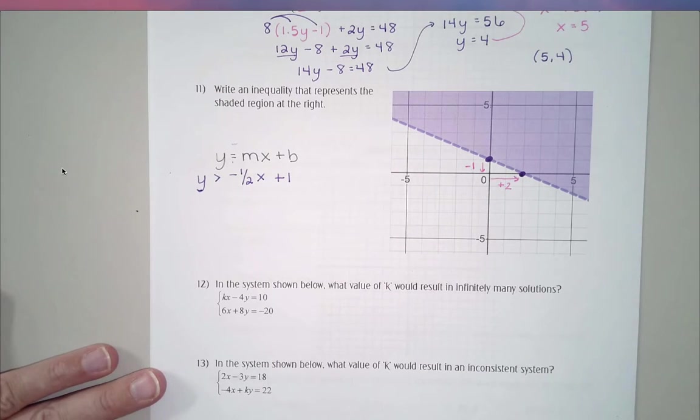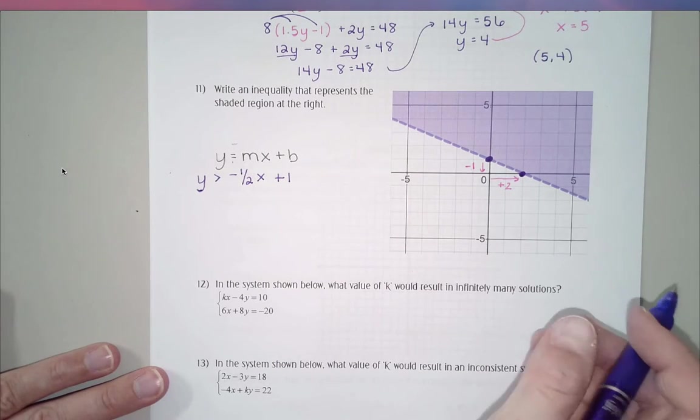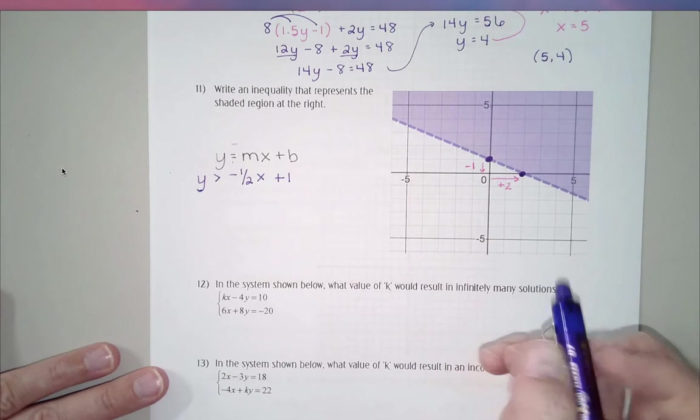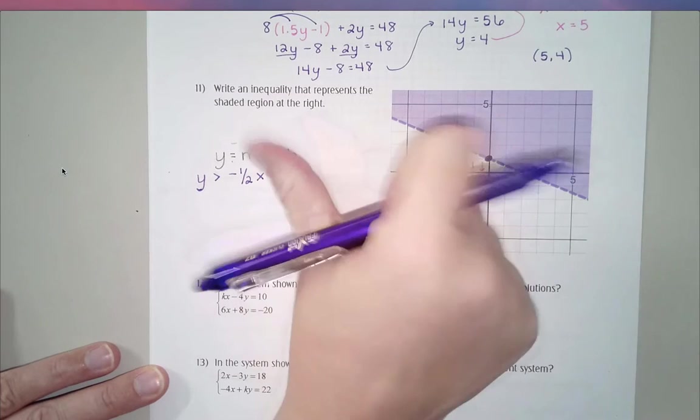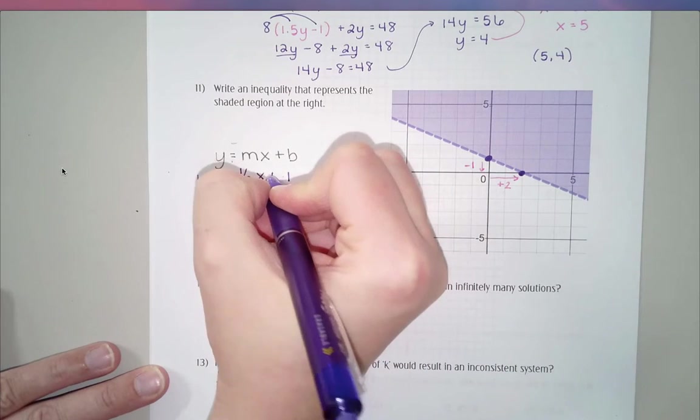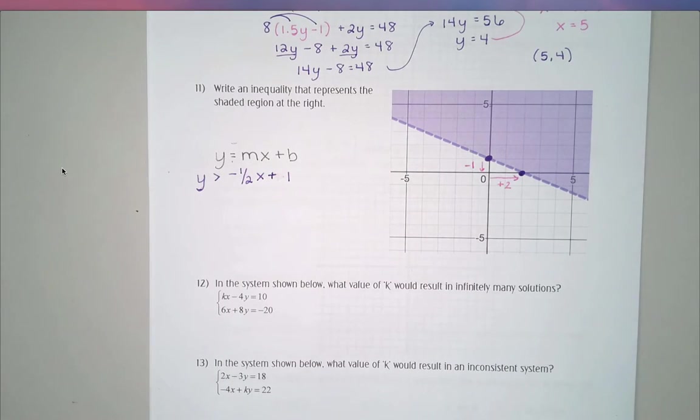As far as my equals sign goes, I don't want to just leave it as an equals. It's shaded up above, so that's going to be greater than. Because of the dotted line, I would not want to include the equal bar. If this was a solid line, I would have an equal to underneath that. But as it stands, this is just my final answer: y is greater than negative 1 half x plus 1.